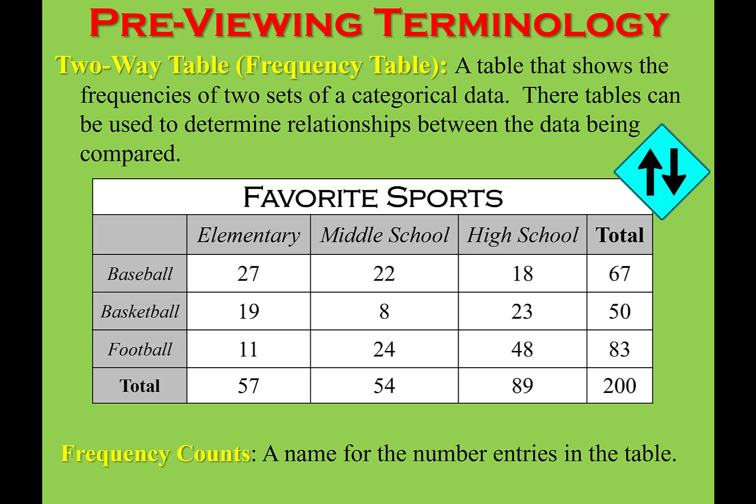Here's a two-way table. Two-way tables typically compare two different pieces of information. Here we have sports and what school level they're in — elementary, middle school, and high school. This is a frequency table because it's telling me how many students were in that particular category.